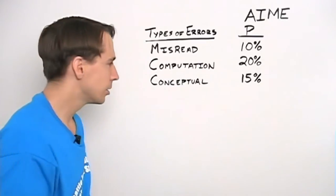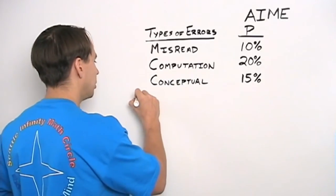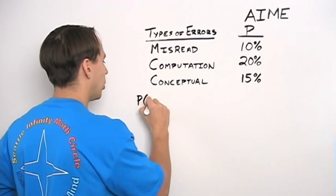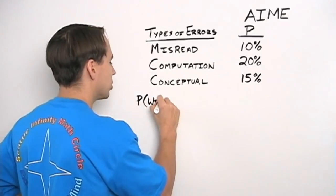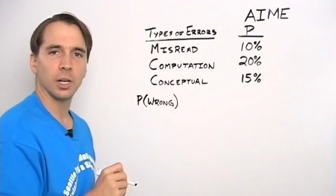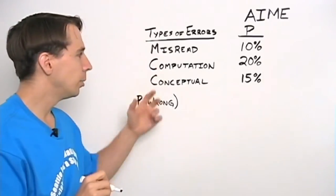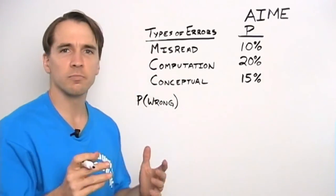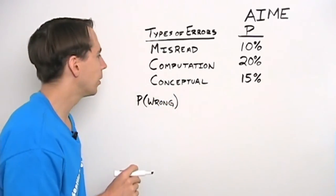So here's the question. What's the probability that I'm wrong? When I finish a number fifteen, and here are all the different mistakes that I could make. I could misread the problem, make a computation error, or just think about the problem in a wrong way, make a conceptual error.